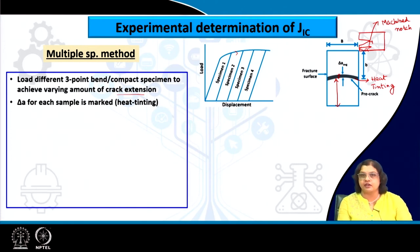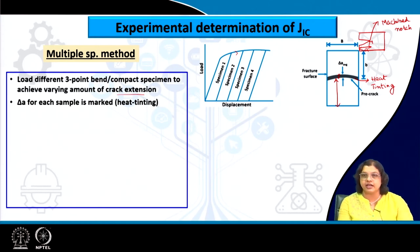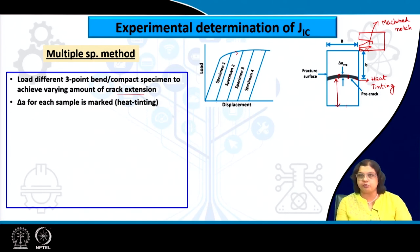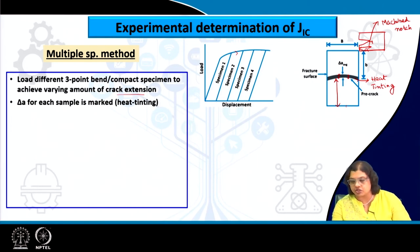Heat tinting involves breaking open the specimen after heating and examining the fracture surface, which shows: the machined notch region, and an arch-shaped crack extension region with a different color. The color difference occurs because the newly formed crack surface is a fresh free surface — highly reactive. When heated, it oxidizes first, particularly for steels and other oxygen-reactive metals, creating a distinct color contrast between the new crack extension and the original machined notch.